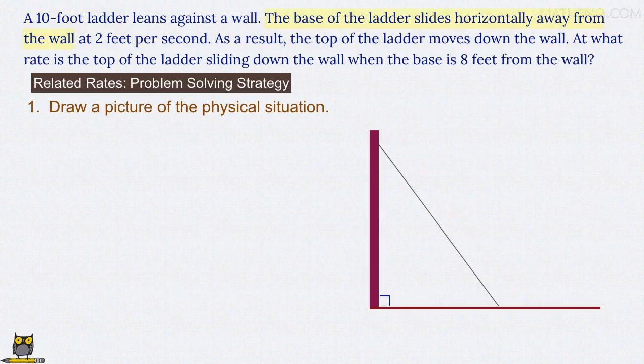a fact that we'll set aside for the moment as we think about what's going on. As time passes in the problem, the base of the ladder slides horizontally along the ground, which causes the top of the ladder to move down the wall. Notice that the ladder never loses contact with the ground or the wall.